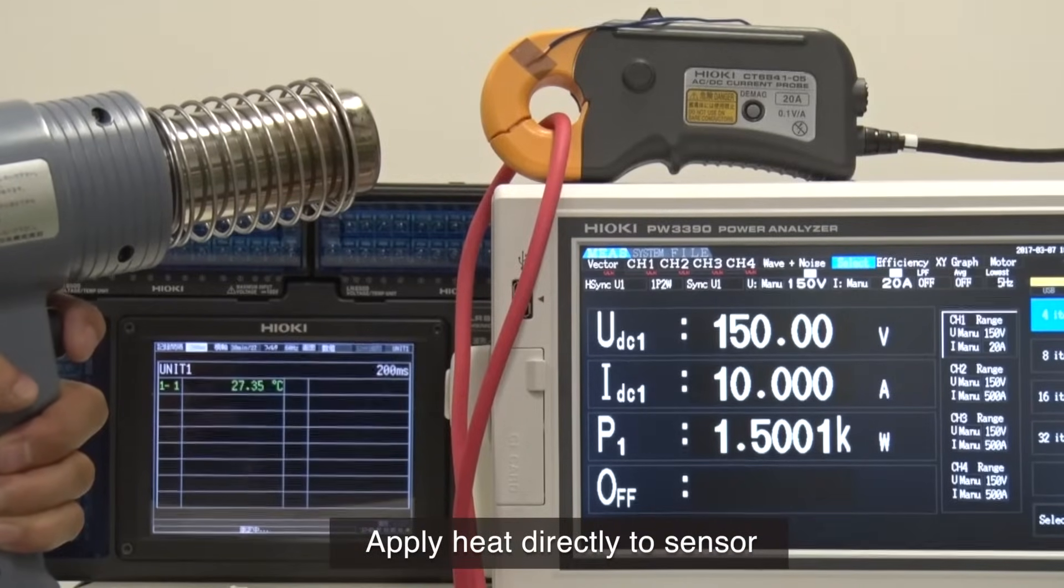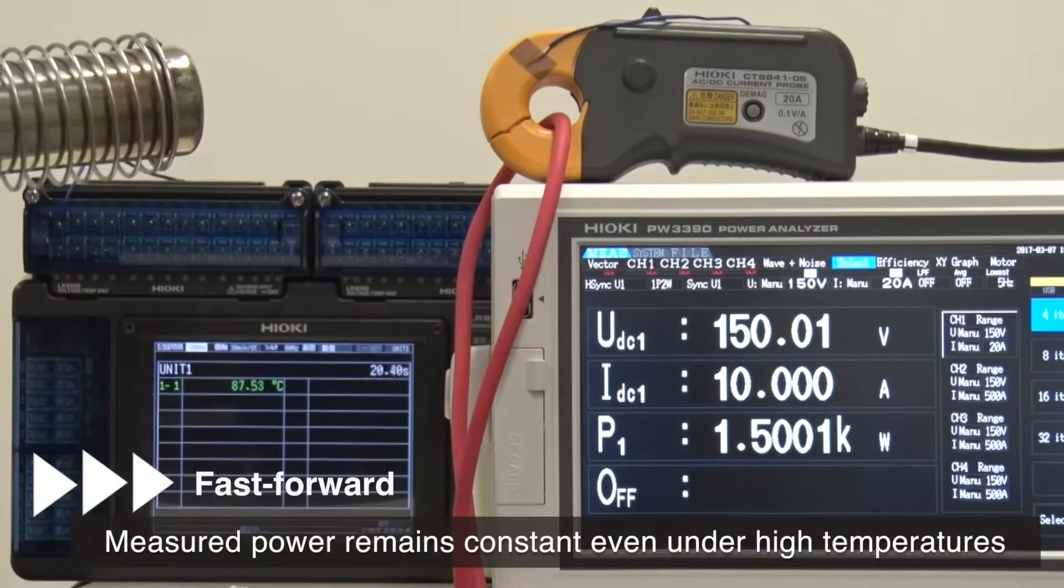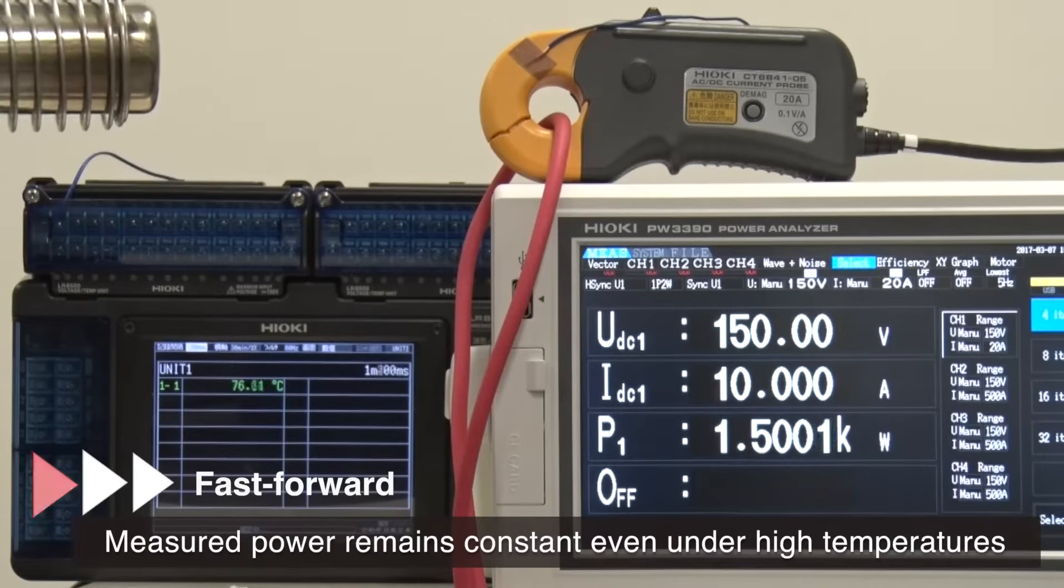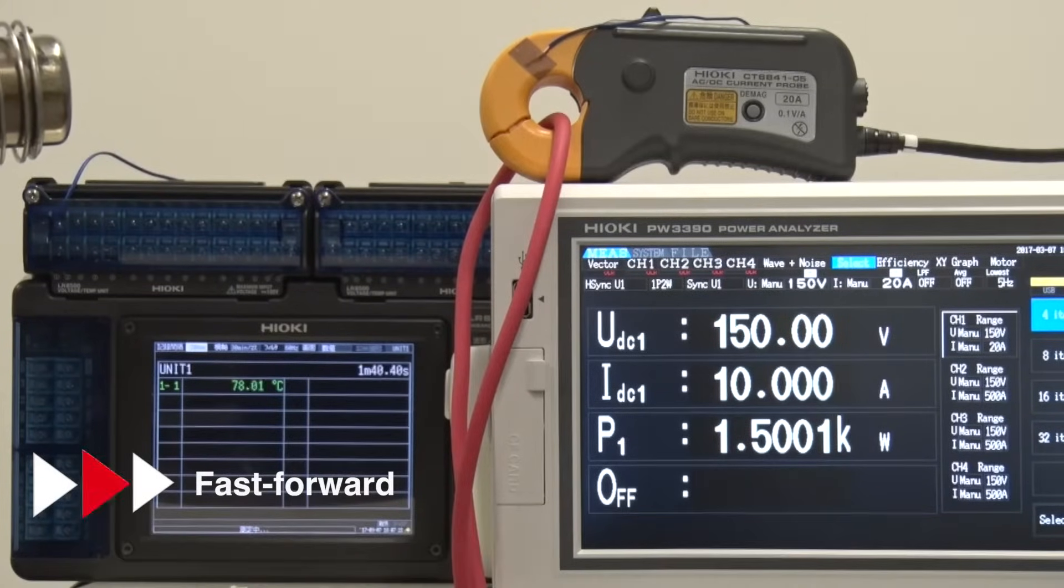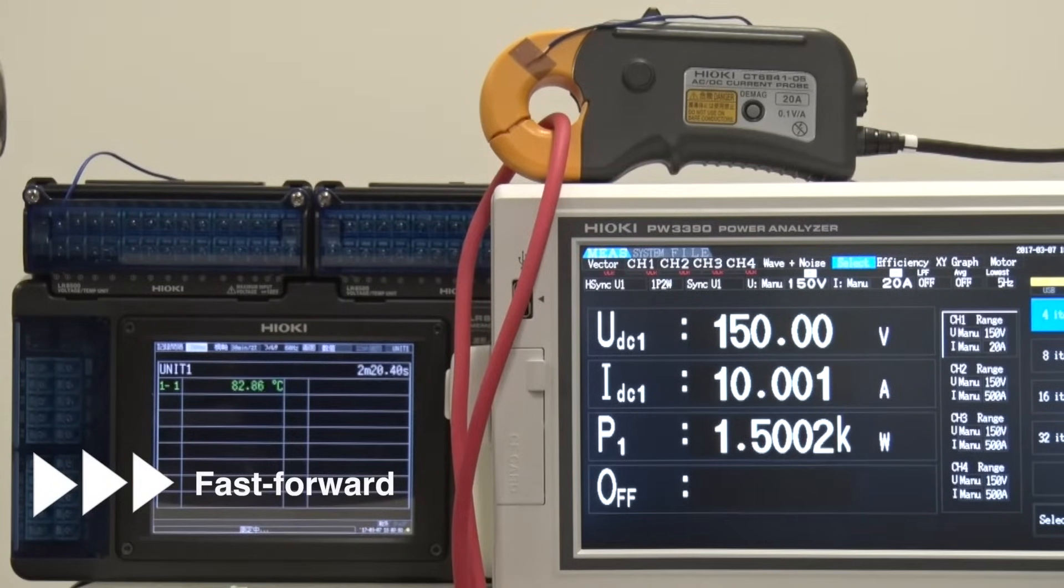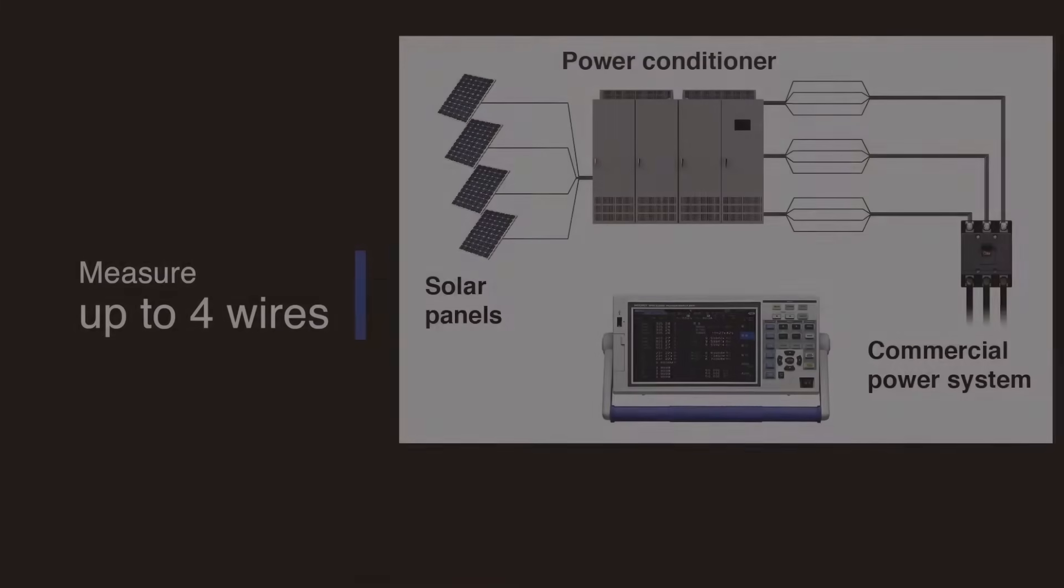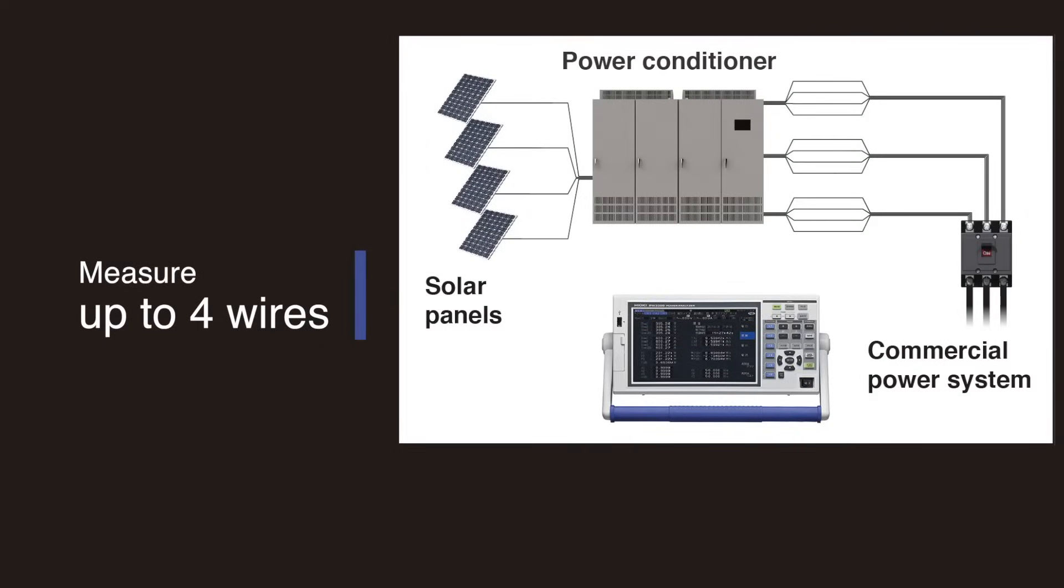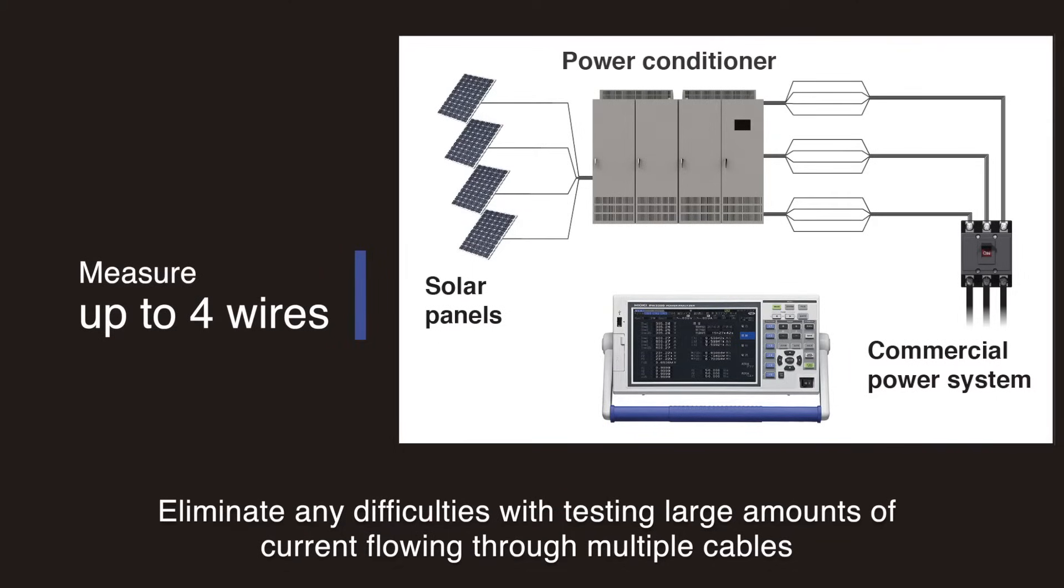Even when heat is directly applied to the sensor, the measured power remains constant even under high temperatures. Simultaneously measure up to four wires and eliminate any previous difficulties you had with testing large amounts of current flowing through multiple cables.